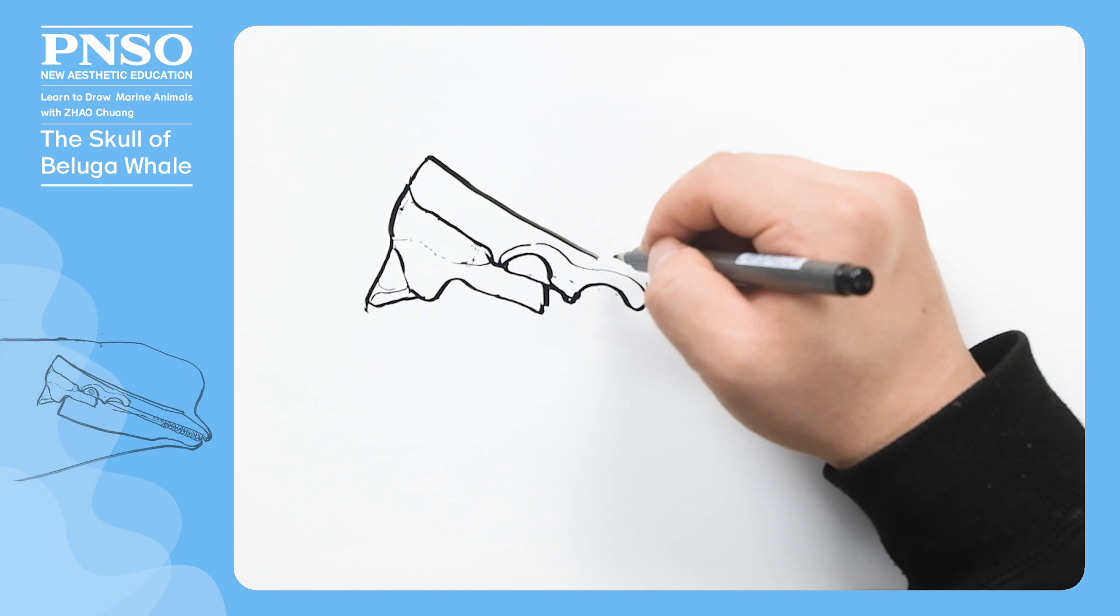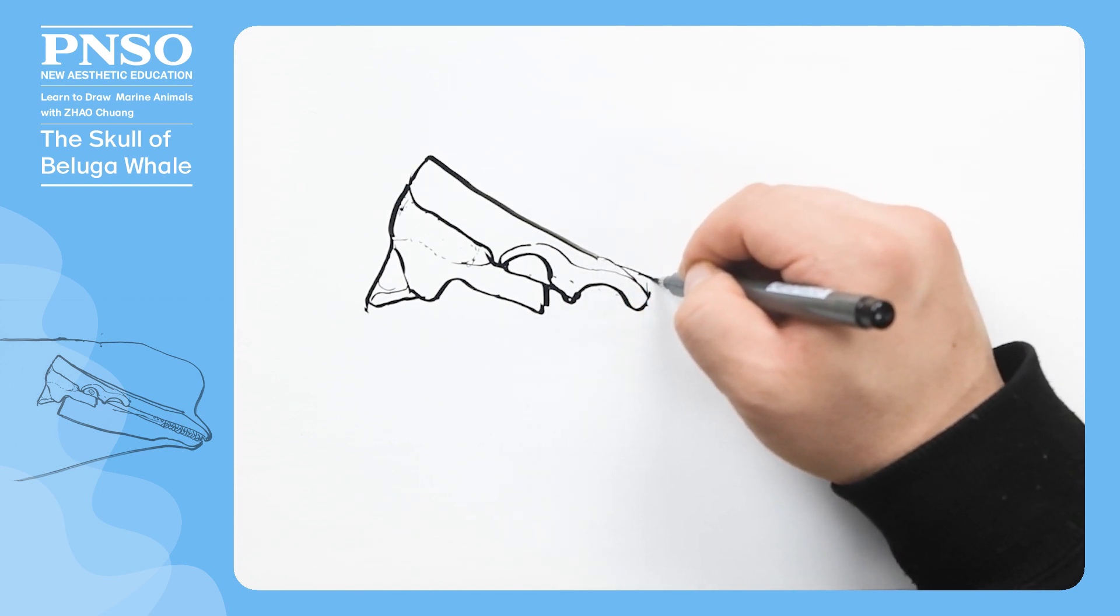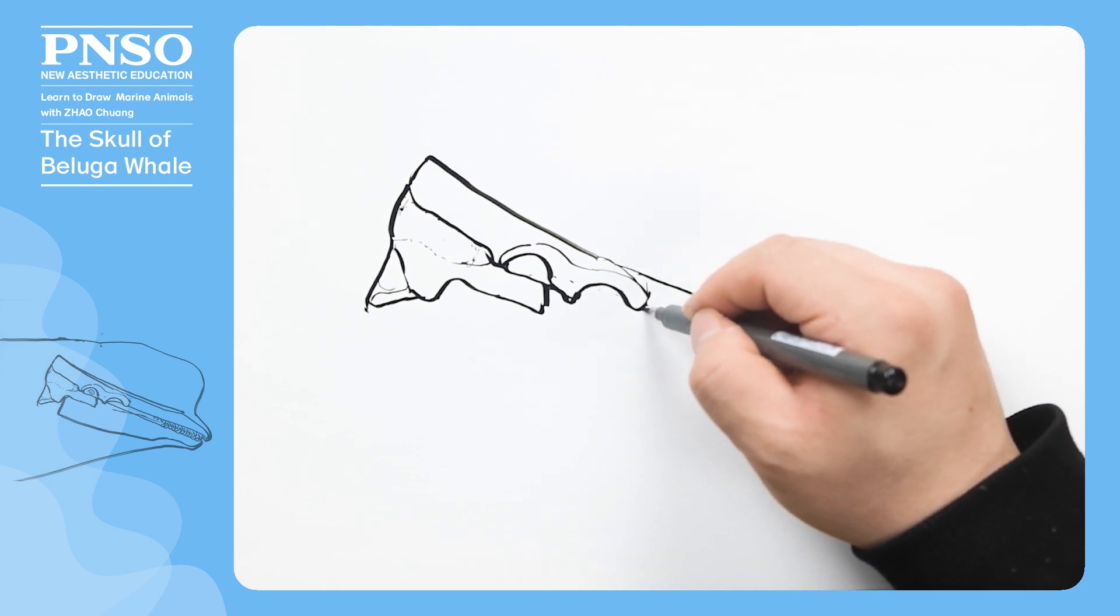After that, let's draw its mouth. Its mouth is composed of two bones. One is the very slender maxilla.